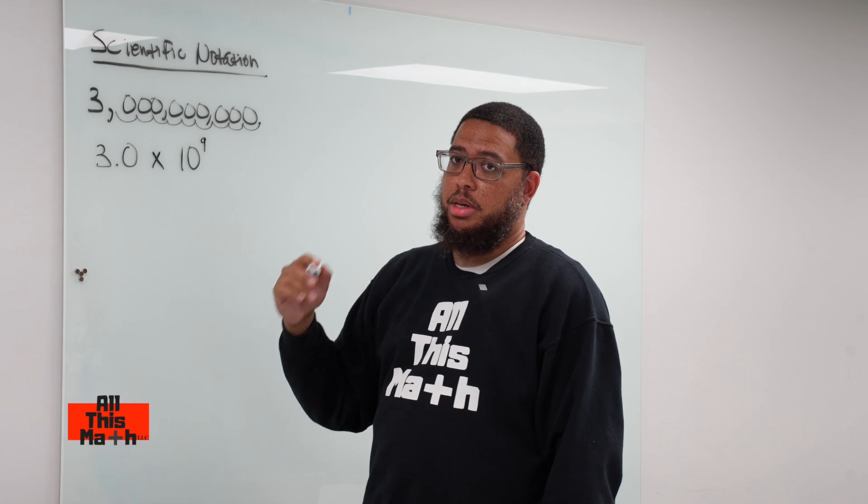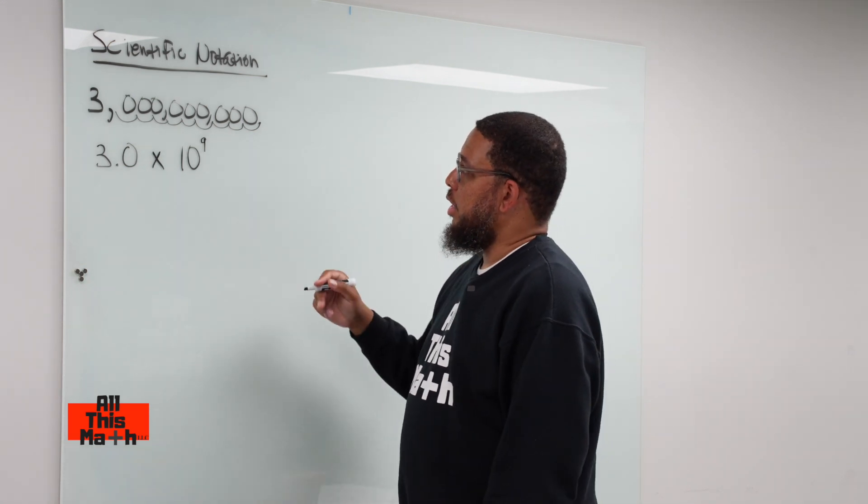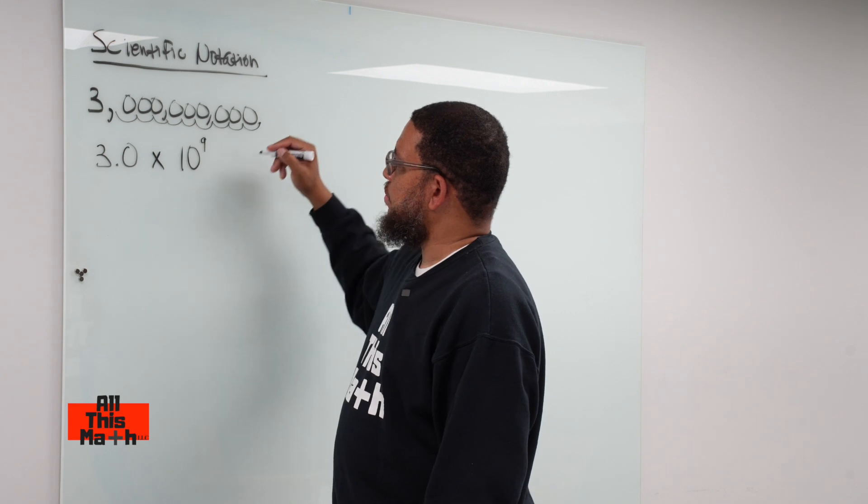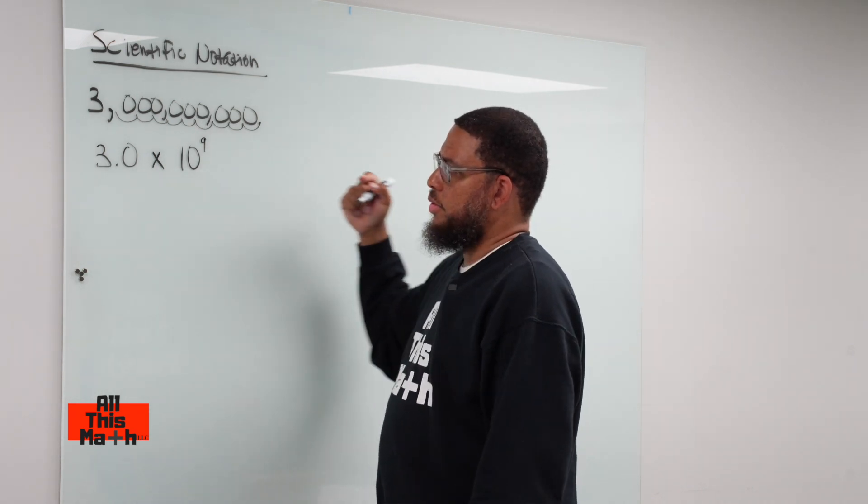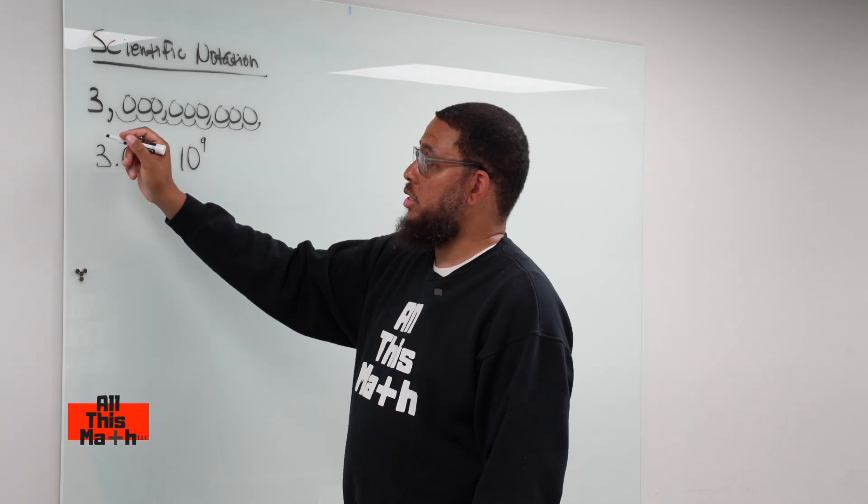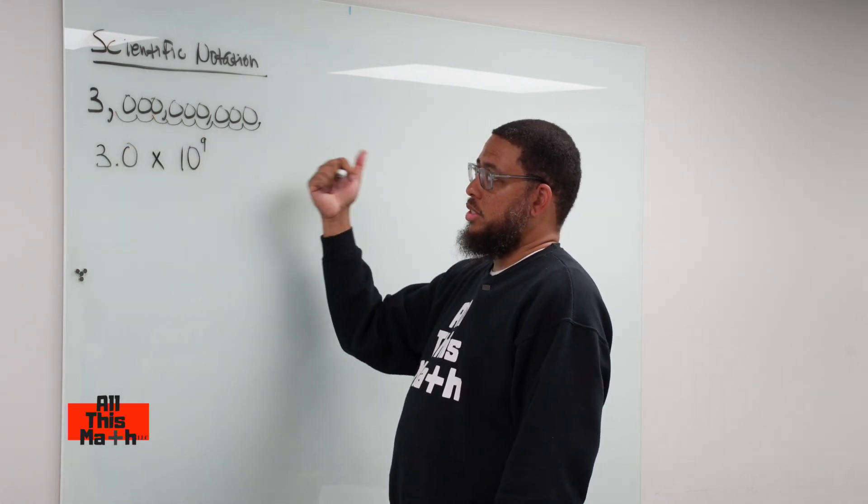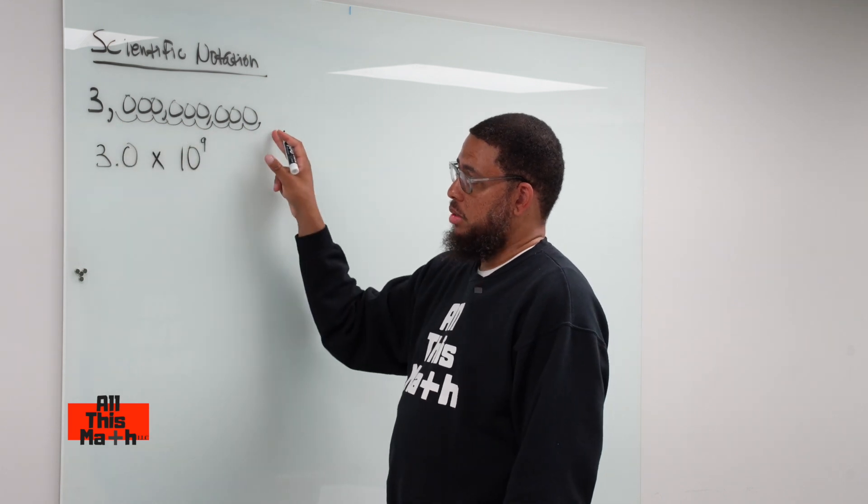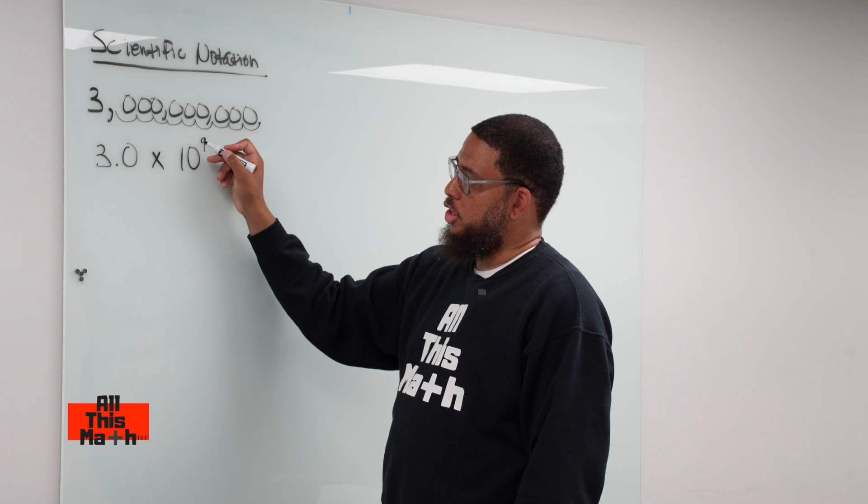Now, sometimes the exponent can be a negative number. How do you know if it's negative or positive? Think about the number line. Positive numbers are to the right, negative numbers are to the left. Now to get back to the original number, since I would have to move to the right to get back to the original number, which is 3 billion, I would have to move to the right. Positive numbers are to the right. So that's why the exponent should be positive.